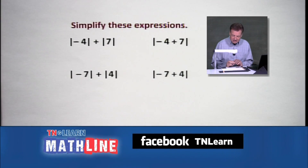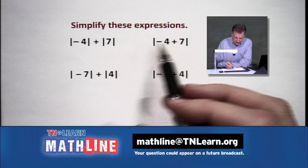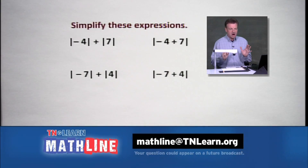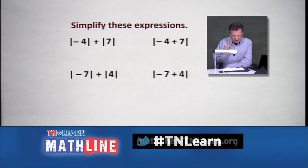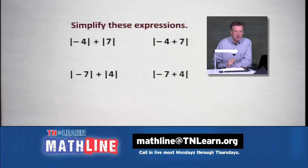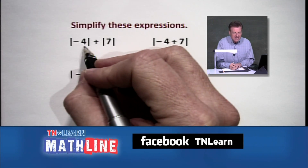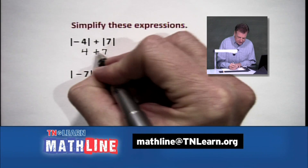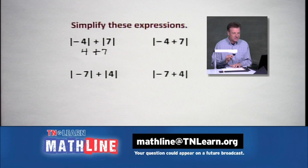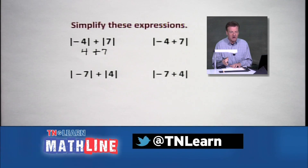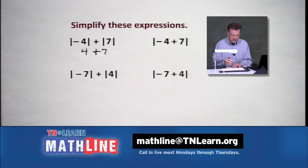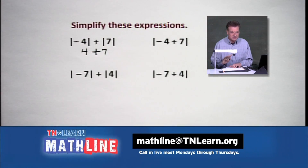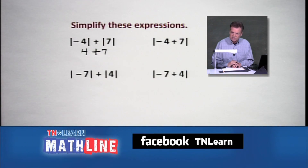Let's look at our first problems — we've got bars all over the place. Four little problems that illustrate things we need to look out for. When you first start with absolute value, it's good to write down each step. The absolute value of negative four is four. The absolute value of seven is seven. Some students feel like the bars mean 'change the sign' — that's not the case. It's all about the positives.